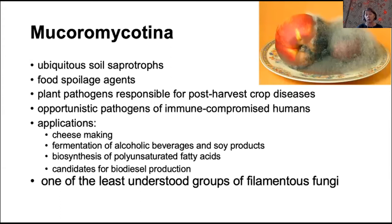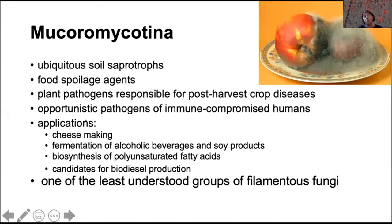Mucoromycotina are ubiquitous soil saprotrophs. They are food spoilage agents. They are plant pathogens responsible for post-harvest crop diseases. And importantly, they are opportunistic pathogens of immunocompromised humans, and they are very difficult to treat because they are resistant to most antifungal agents. There are multiple applications of mucoromycotina, ranging from cheesemaking to biodiesel production, and yet this is one of the least understood groups of filamentous fungi.